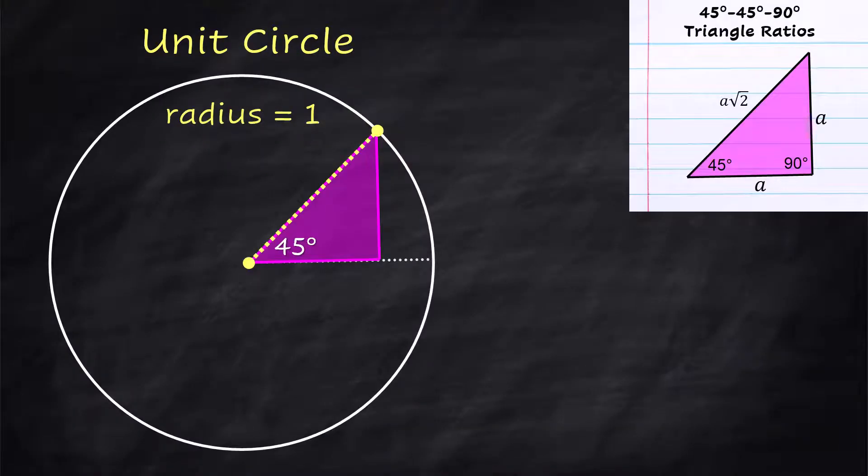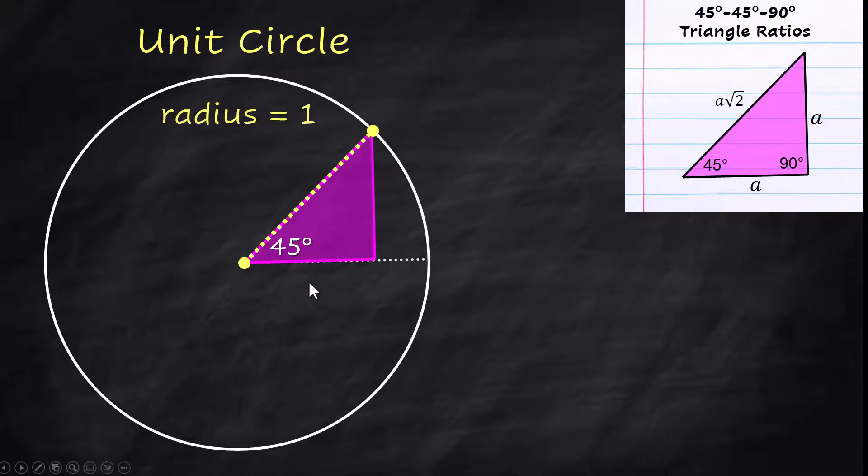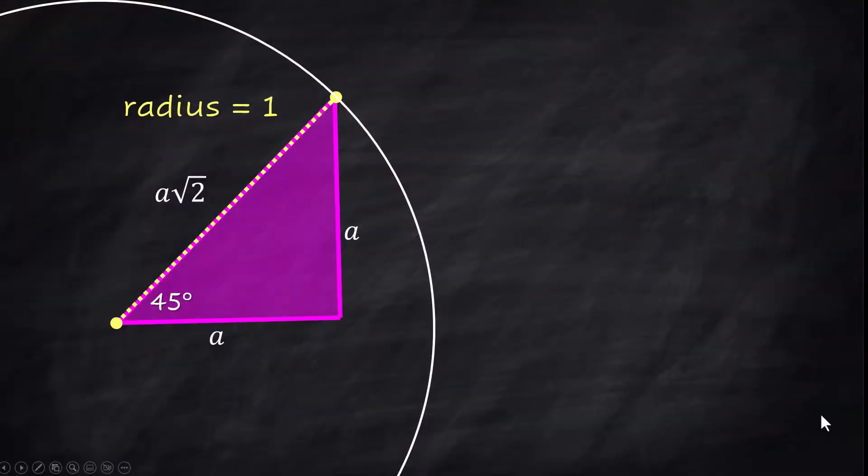Right now we're going to be looking at the 45-45-90 triangle when it is inside of the unit circle. Again, the hypotenuse is going to be the radius of the circle. So we know the length of that is one. When you are using a 45-45-90 triangle, this is isosceles. Both of the side lengths are the same and the hypotenuse is a times the square root of two. Let's do some math so we can figure out what's going on here.